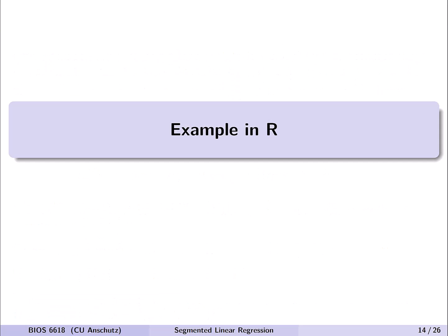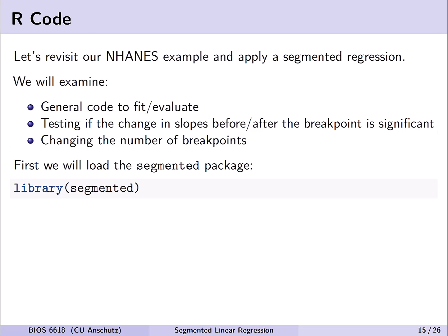Let's jump into an example in R and see how to leverage segmented regression. We'll revisit the NHANES example, applying segmented regression through example code, output, and interpretations. We'll test whether we actually need the segmented regression and evaluate if one breakpoint is enough or if we should use two or three. The first step is to load the necessary library: segmented.